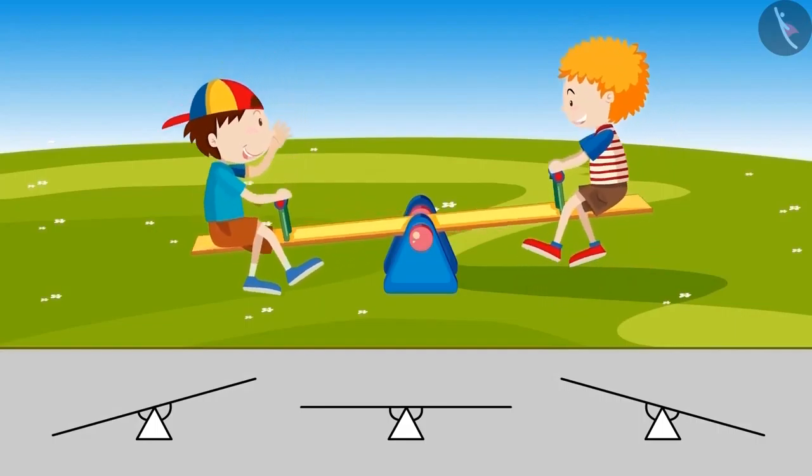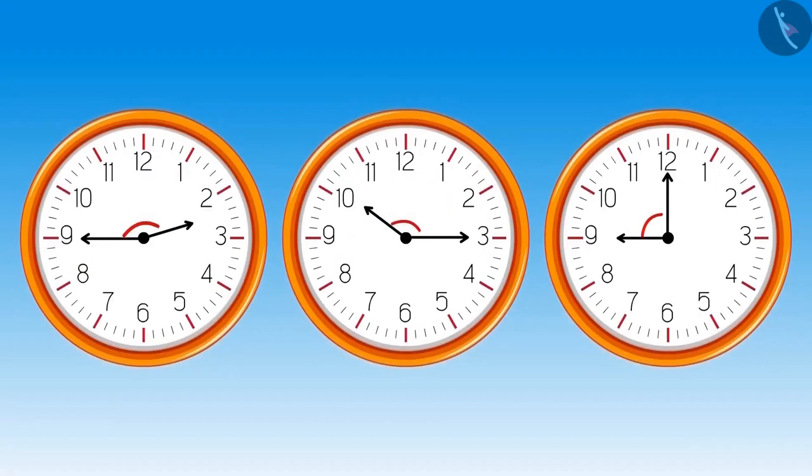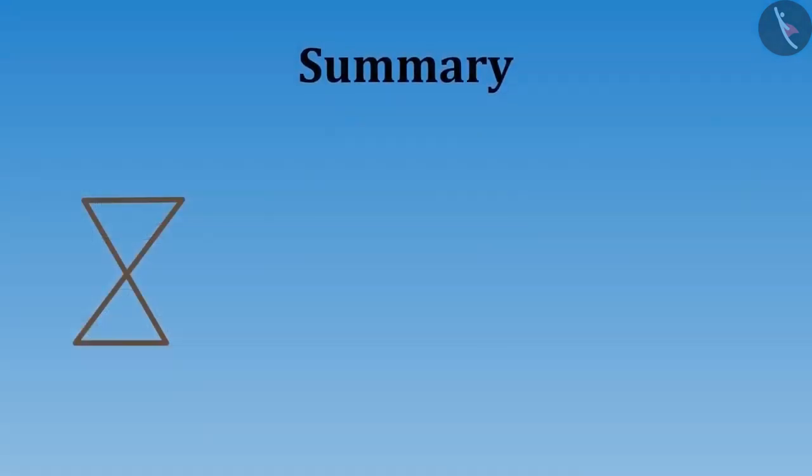Do you observe that there are different angles in objects around us? For example, this swing? The hands of a clock also make different angles at different times of the day.